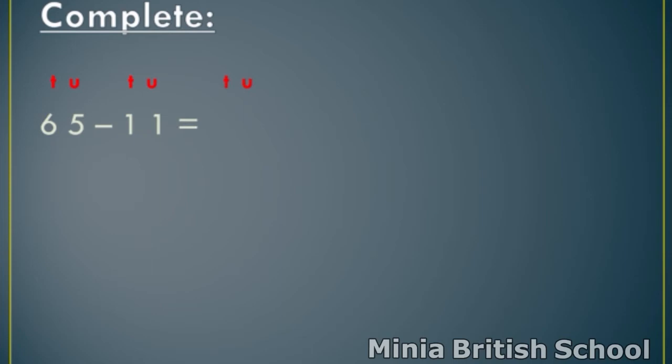And in tens, you have number one and number six. Where is the smallest number? One. So, count after one to number six: two, three, four, five, six. How many fingers? Five. So, write five under tens. The answer is fifty-four.